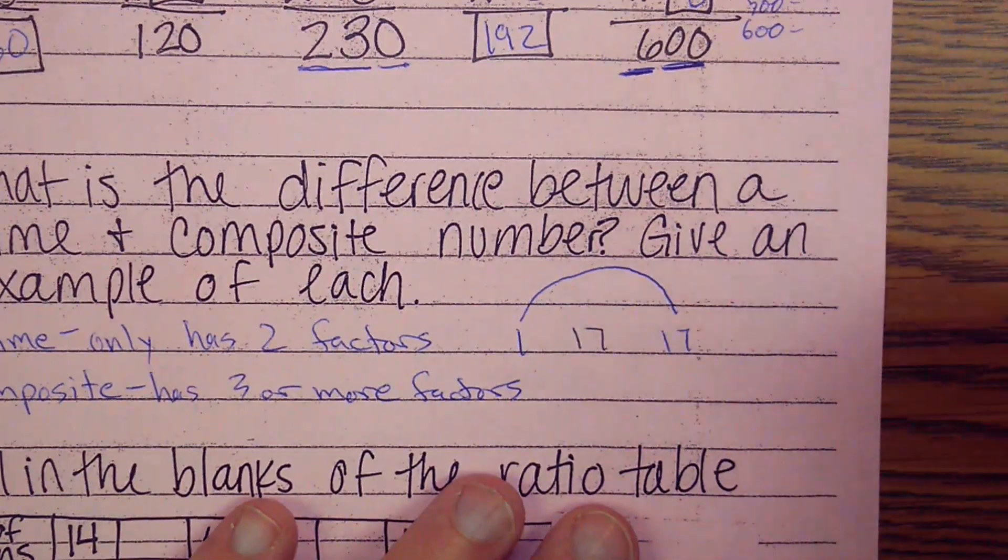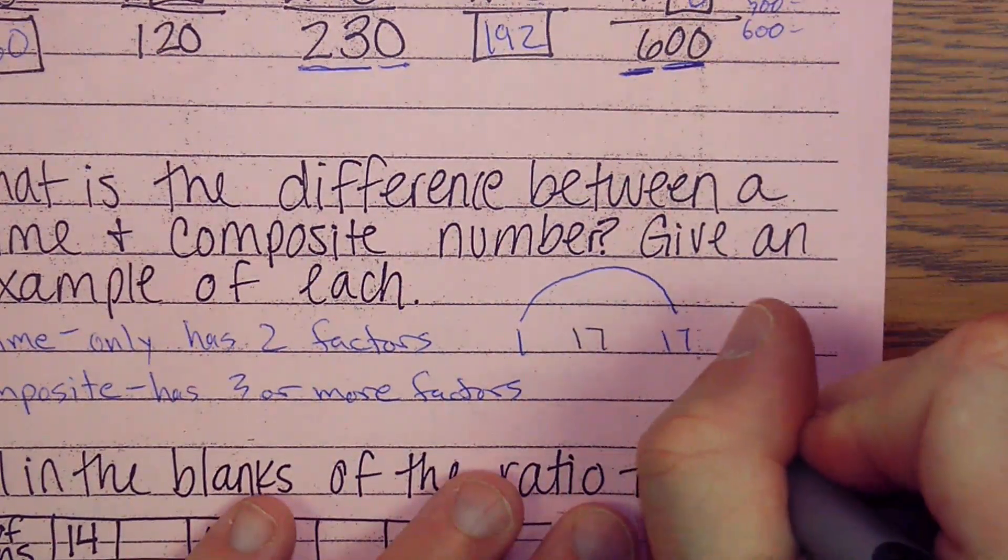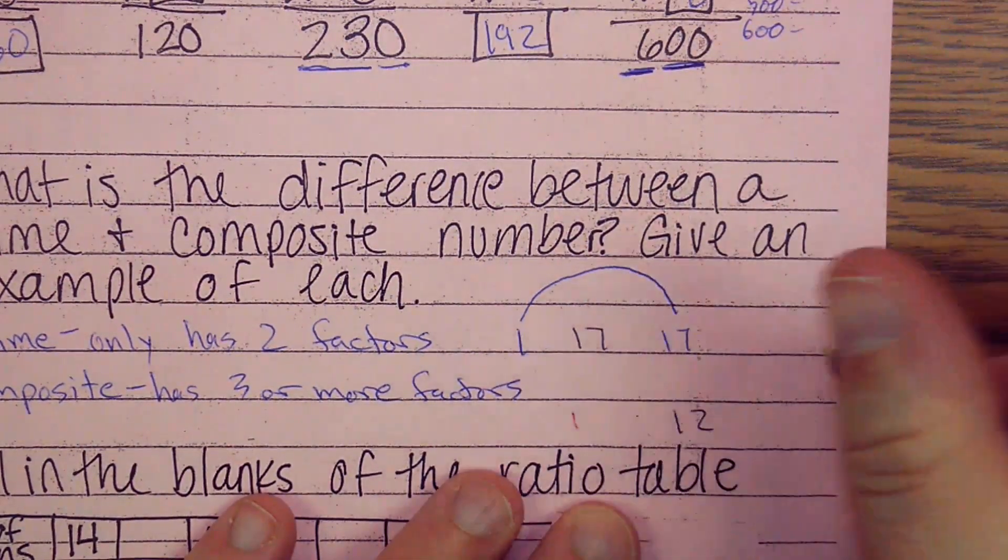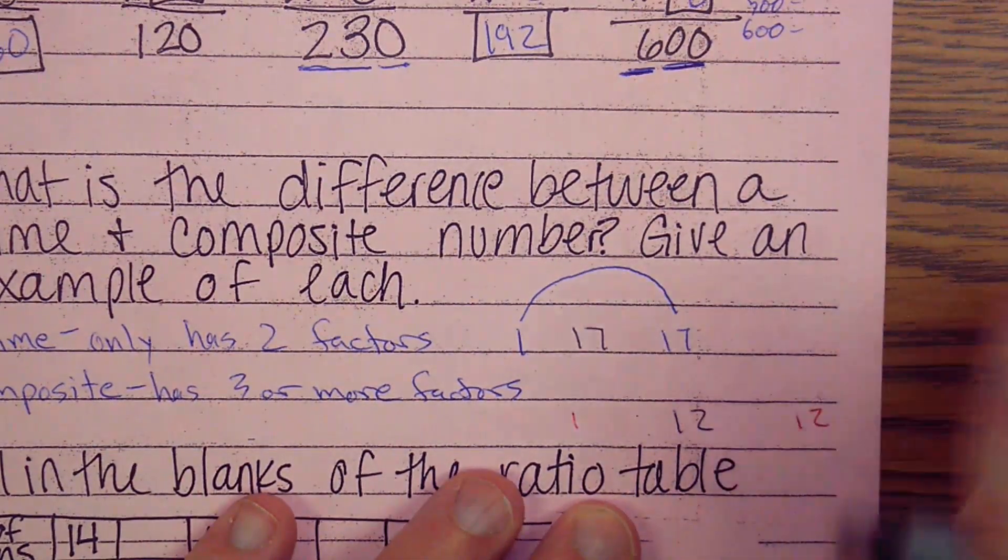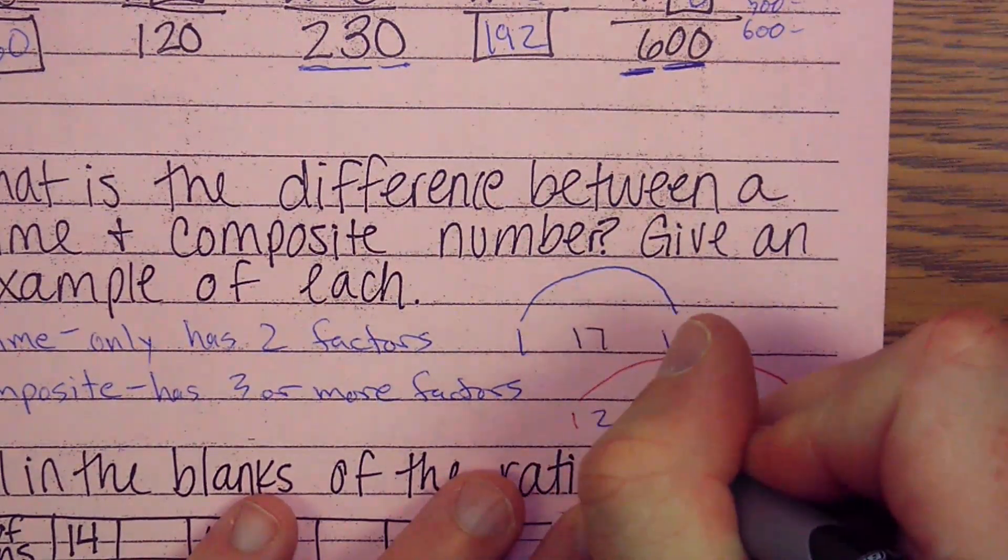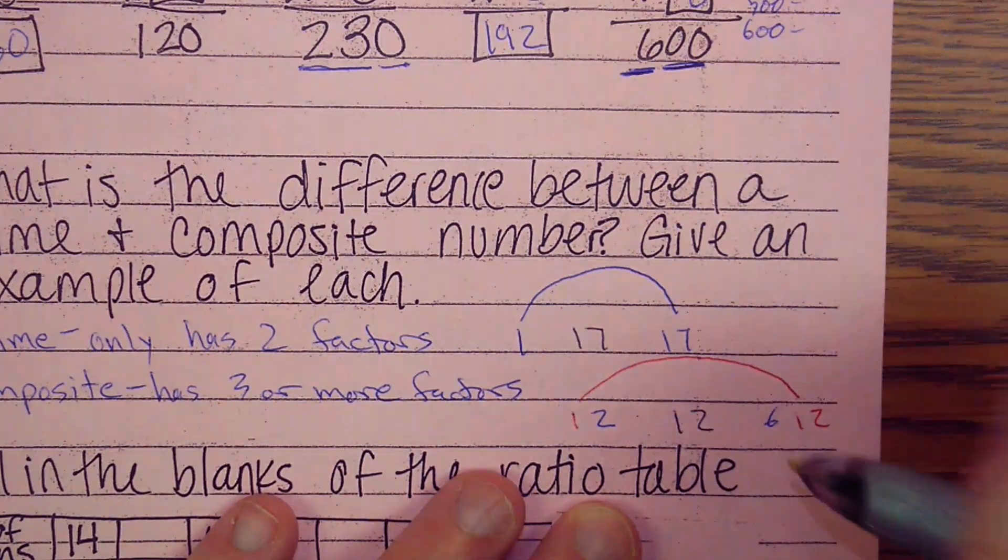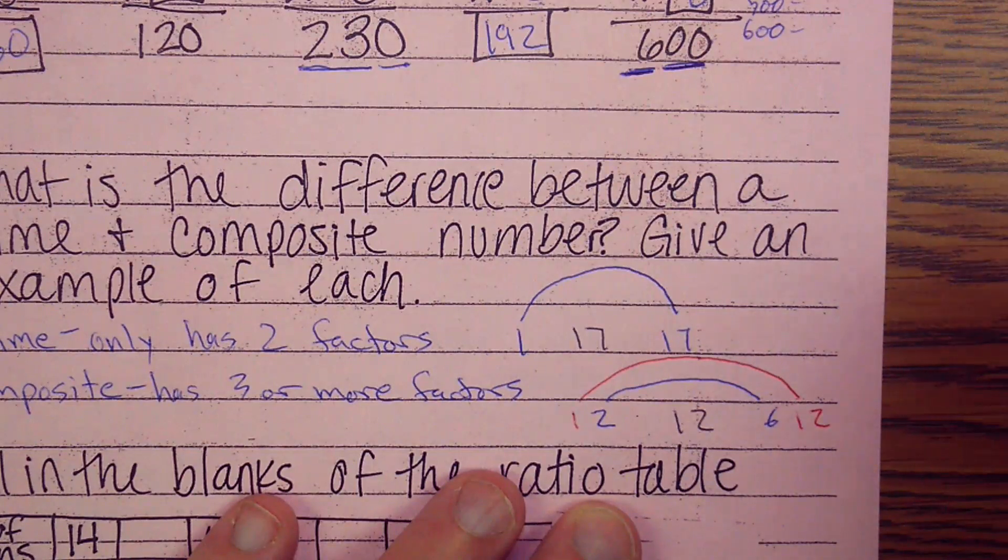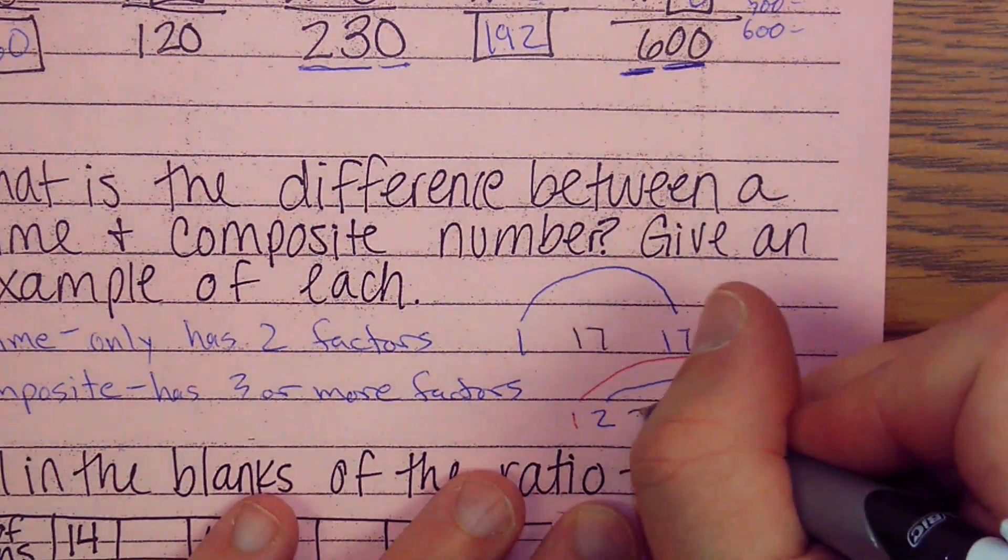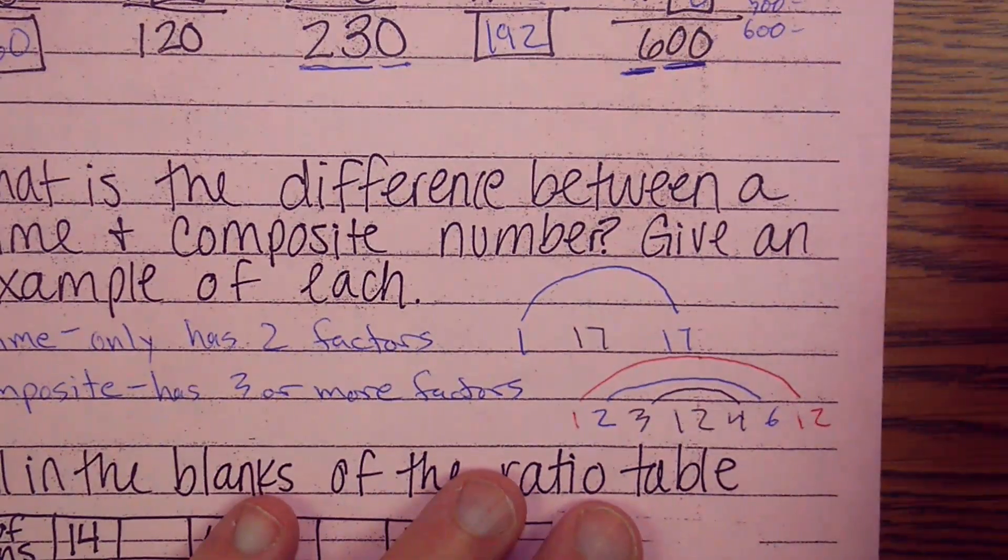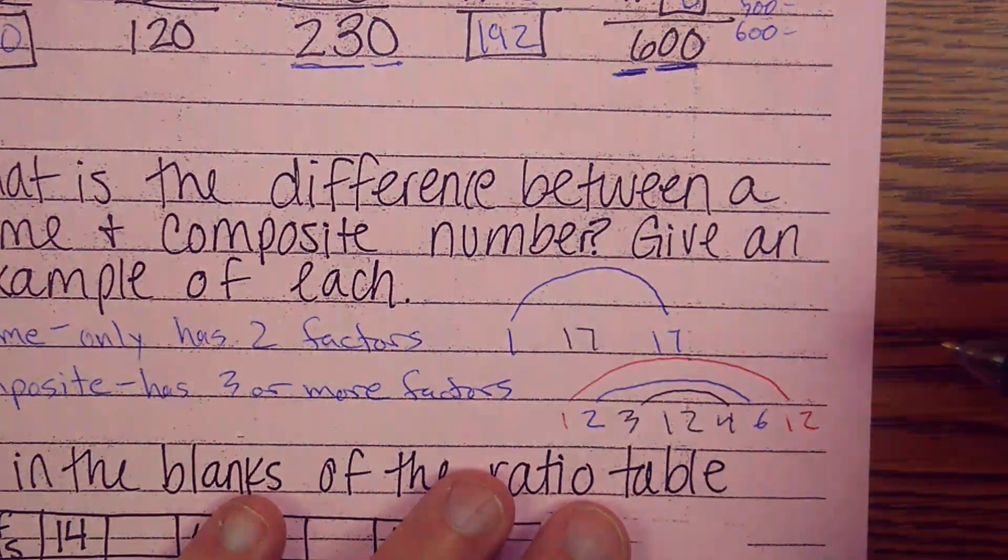However, if I choose a number like, let's say, 12. I've got 1 and I have 12. Rainbow. I have 2 and I have 6 because 2 times 6 is 12. Rainbow. And then I have 3 times 4. Rainbow. That is a composite number.